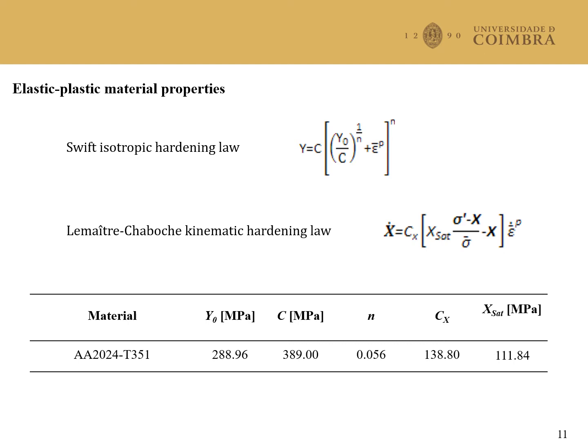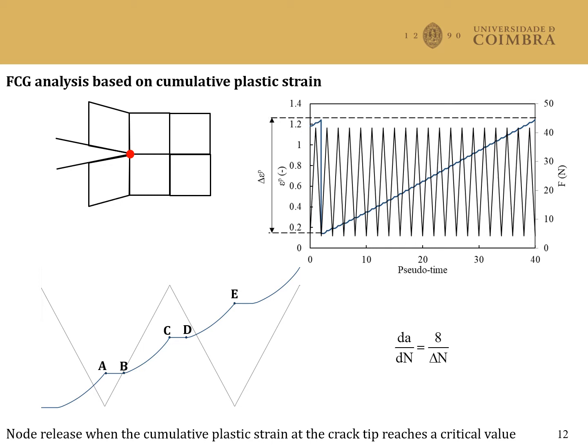Fatigue crack growth was simulated by node release, which occurred when the cumulative plastic strain at the crack tip reached a critical value, as illustrated in the figure on the right-hand side. Plastic strain increases progressively with load cycling, and the node is released when its value reaches the critical strain defined by the horizontal dashed line. The figure below is a detail for one load cycle. We can identify two linear regions between A and B and C and D, and two regions with plastic deformation: B to C during loading, and D to E during unloading.